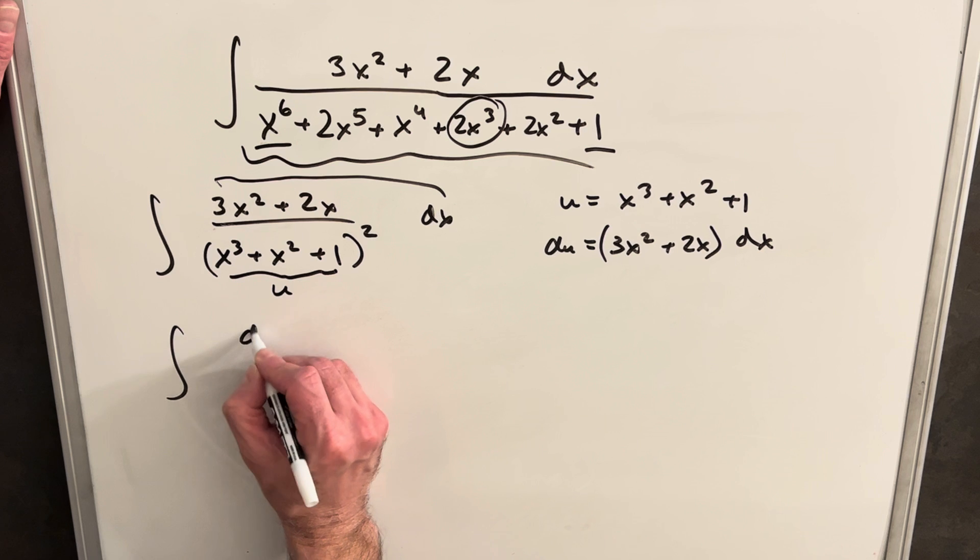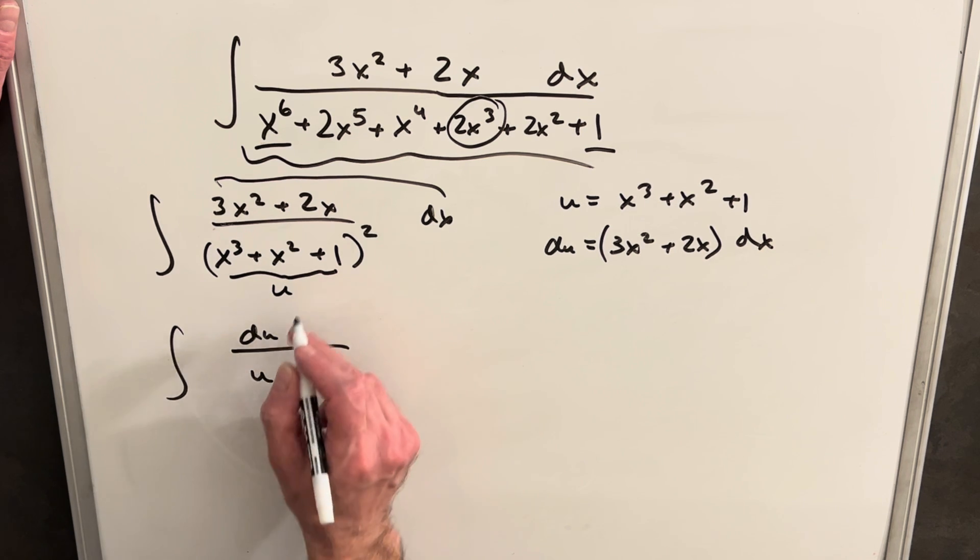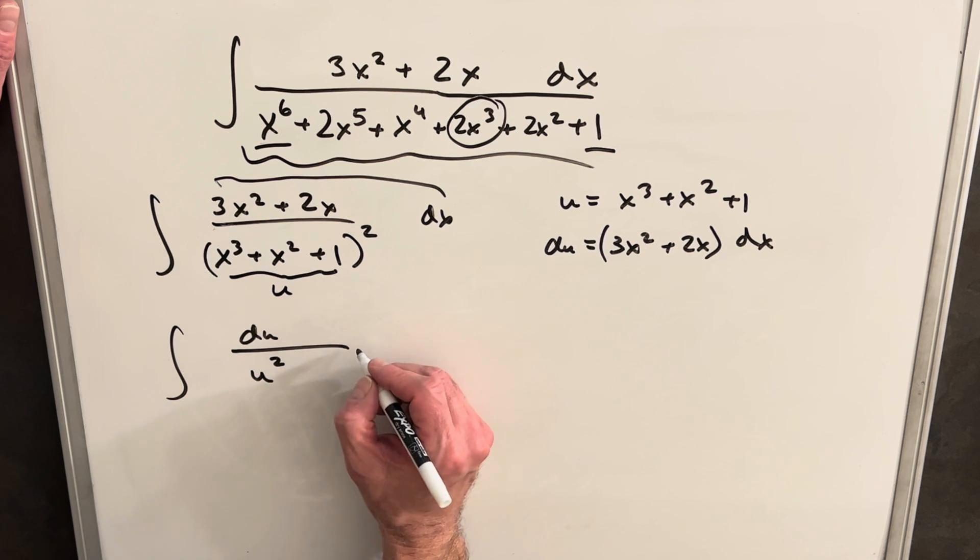We're going to have du in the numerator. Then we're going to have, this thing's going to be u squared, don't forget the squared.